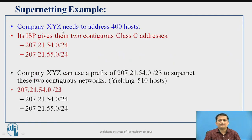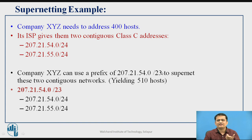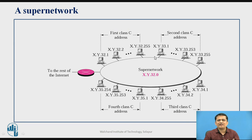For example, a company needing 400 hosts obtains two Class C IP addresses and combines them to form a supernet address. Instead of using those two separate addresses, the company uses 207.21.54.0/23, forming a supernet. In this supernet address, the network ID part is reduced — originally it was /24 and now it has become /23. This illustrates how different Class C networks are combined to form a single supernetwork.